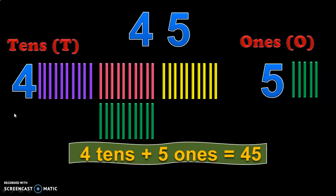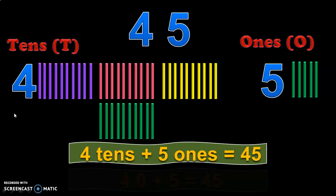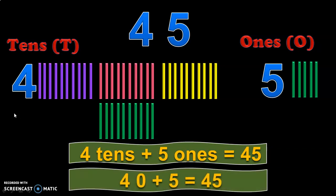There is another way you can write this. It is: four tens is forty, plus five ones which is five, which is equal to 45.